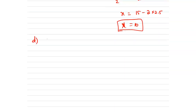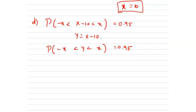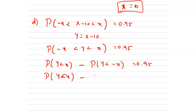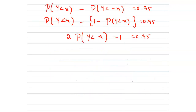For the fourth part, we have to find x such that p of negative 6 less than X minus 10 less than x equals 0.95. Now let y equal x minus 10, so we write p of negative 6 less than y less than x equals 0.95. By symmetry, this becomes 1 minus p of y less than x, giving twice p of y less than x minus 1 equals 0.95.